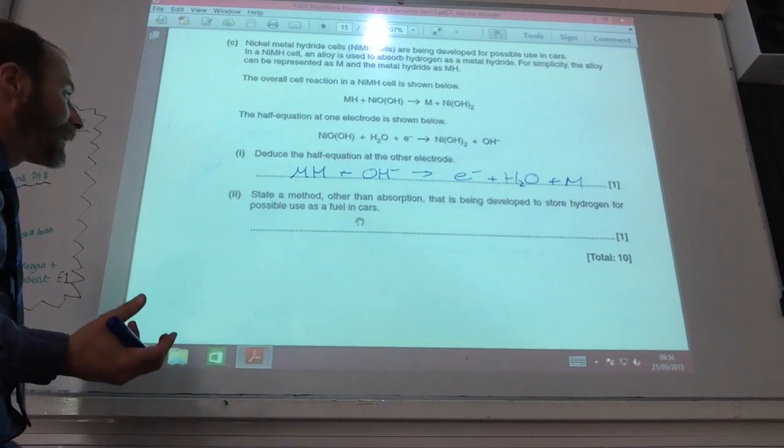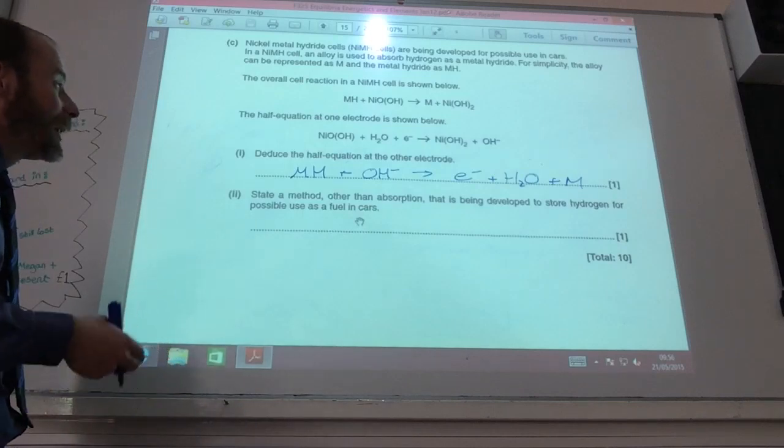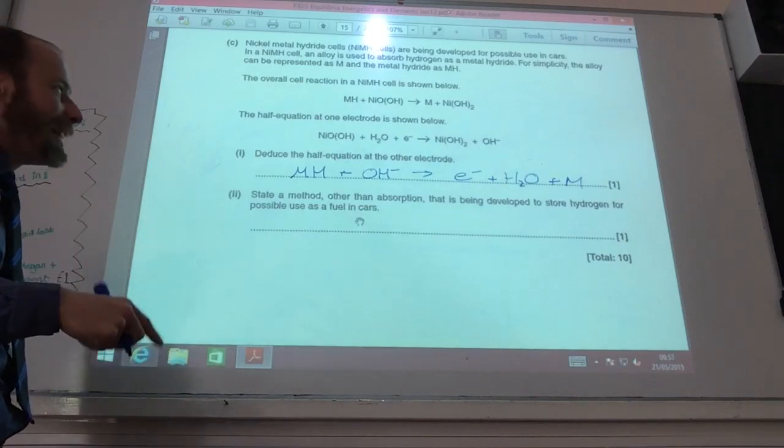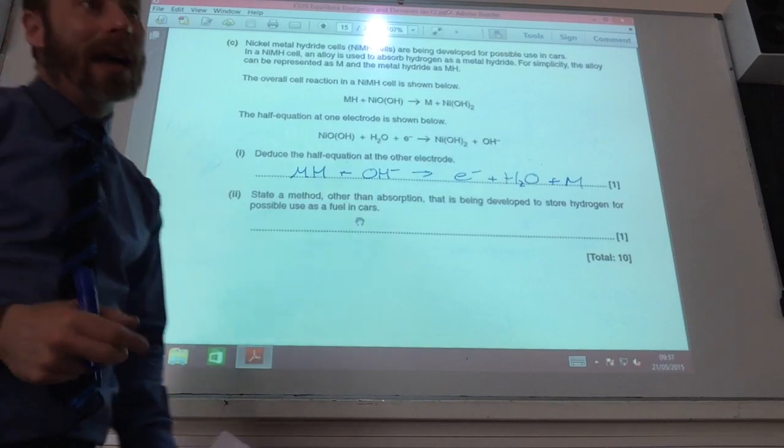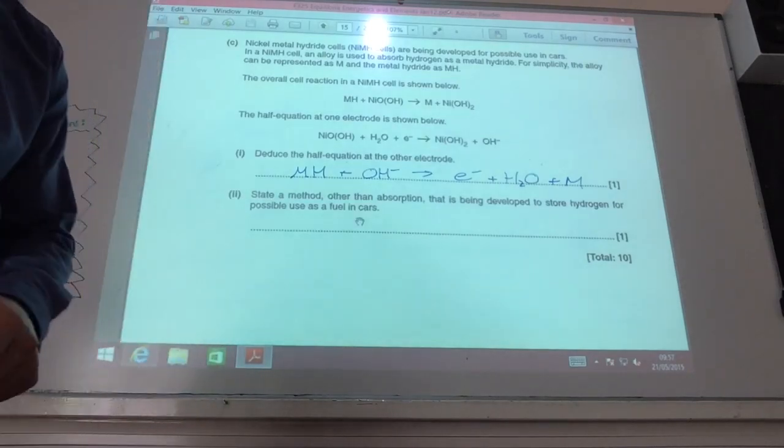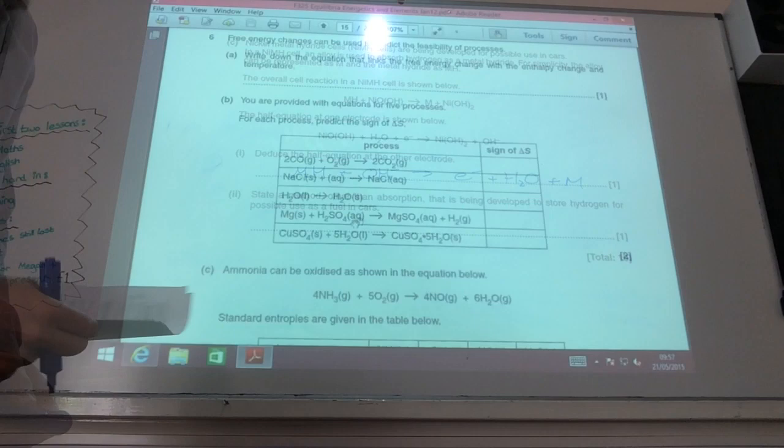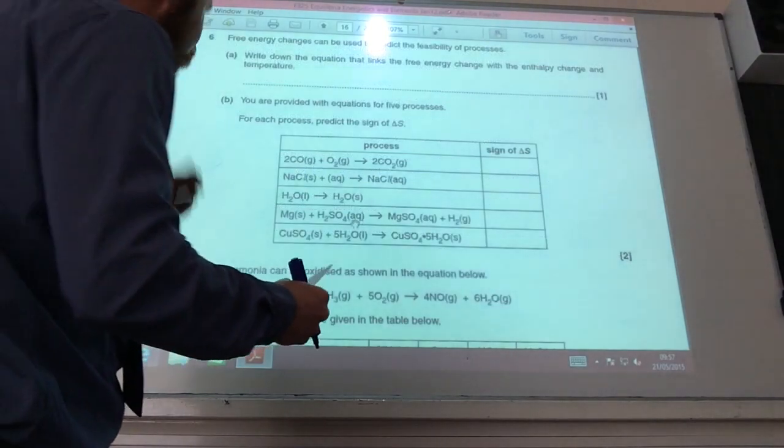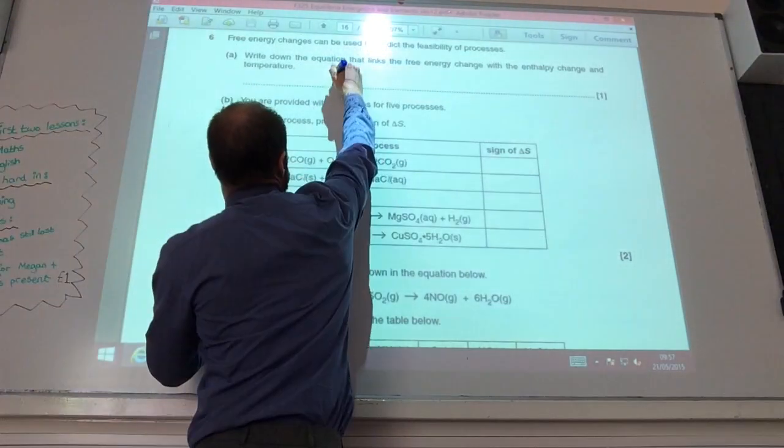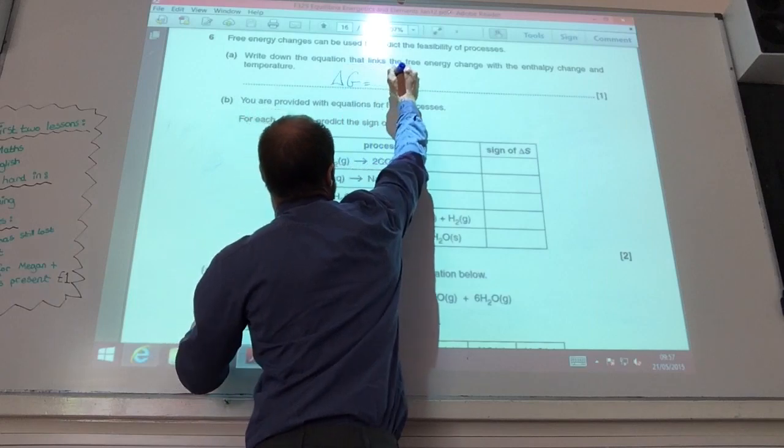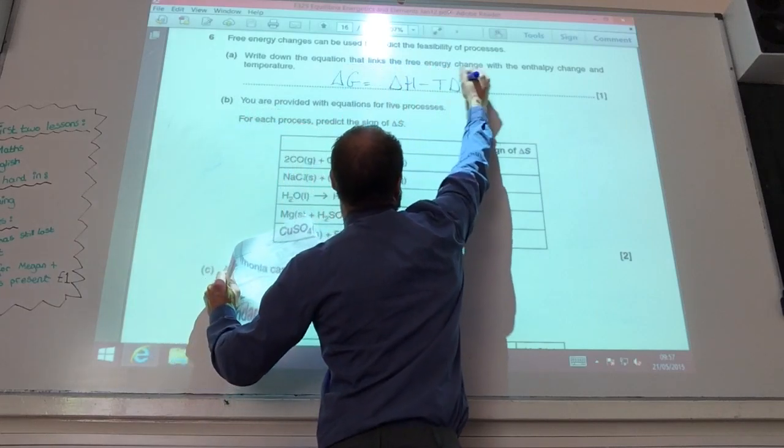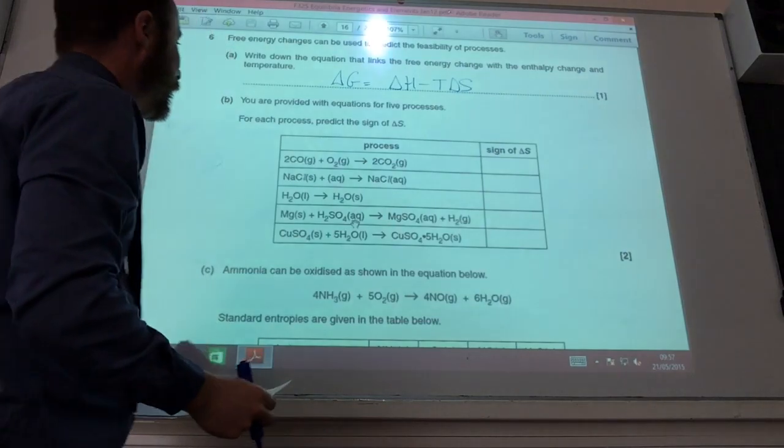Another method other than absorption that's been developed to store hydrogen is adsorption, AD, adsorption, where it gets stored on a solid. Okay, so question six now. Equation of the links, free energy. Delta G equals delta H minus T delta S. You obviously know all that one by now.